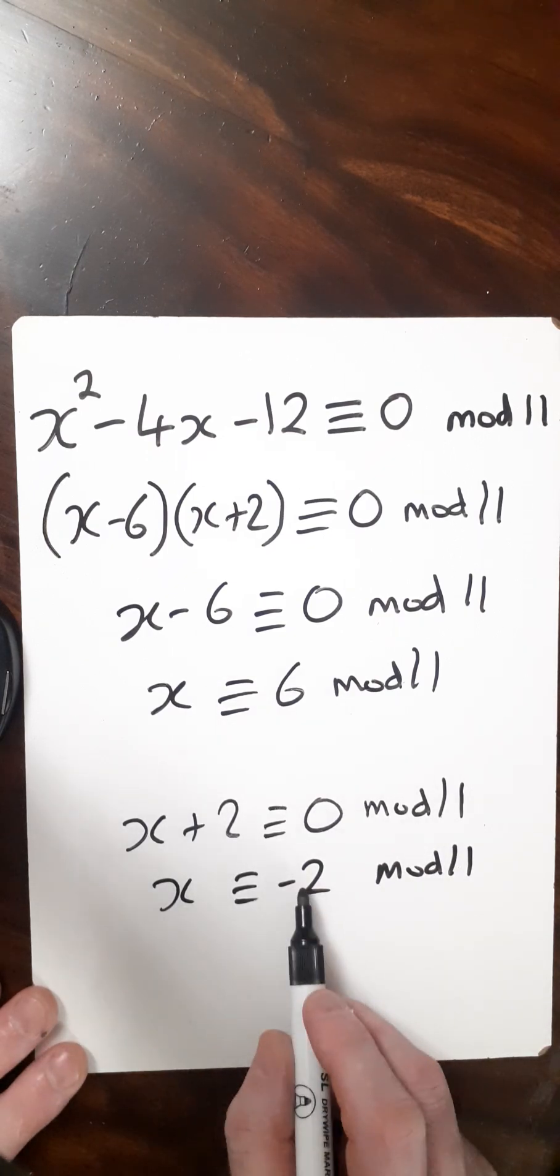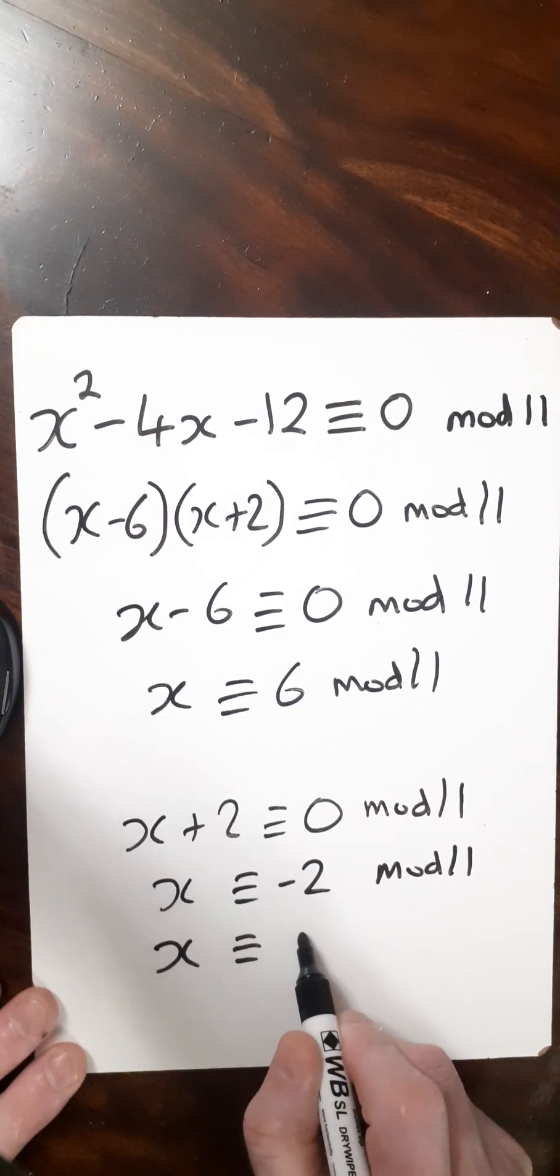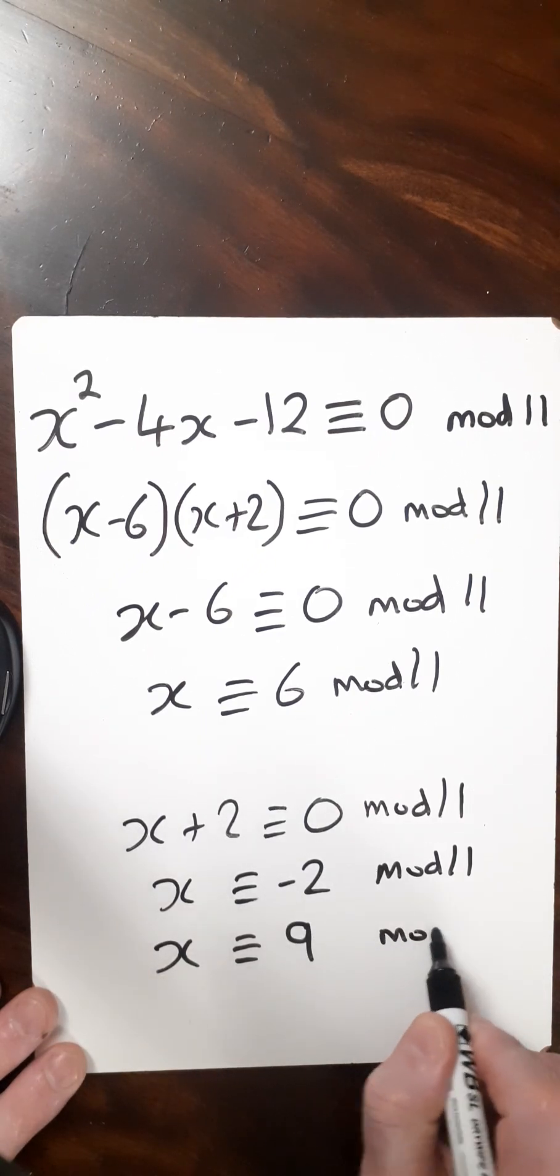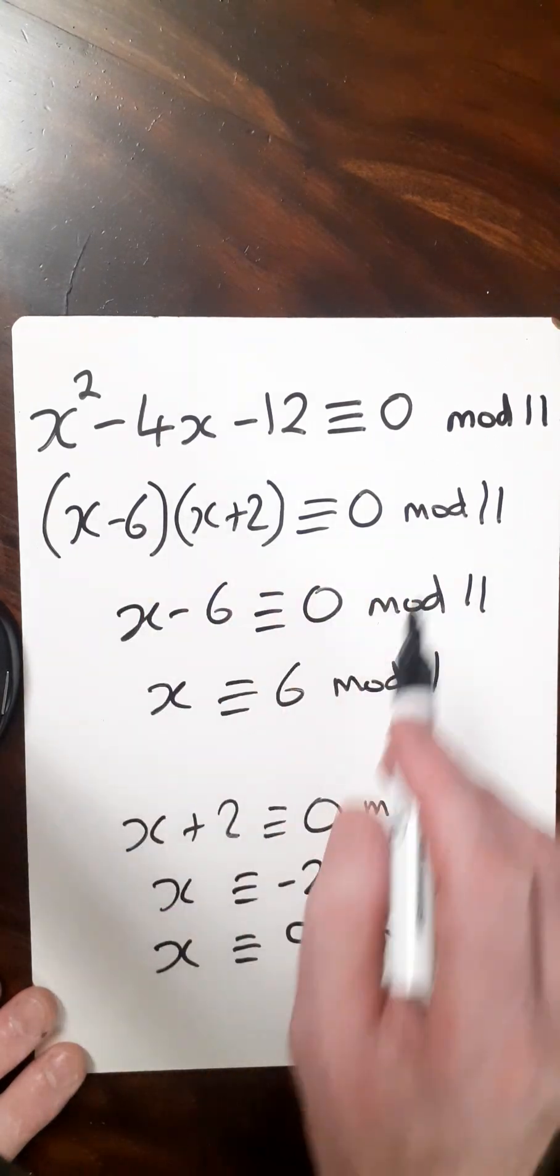Let's convert this to a positive integer. We add 11 to get x ≡ 9 (mod 11).